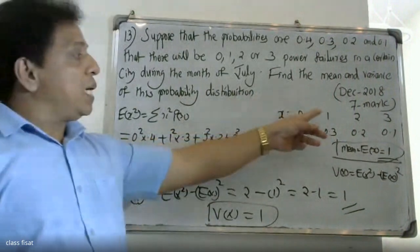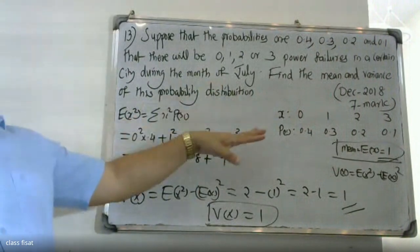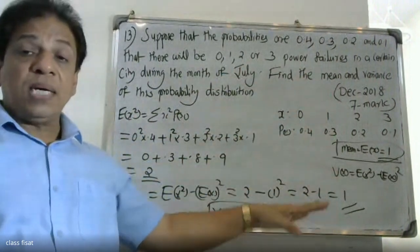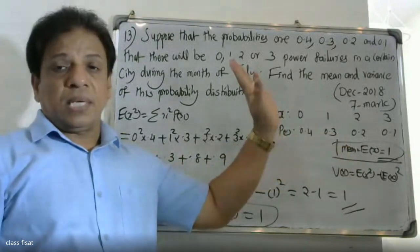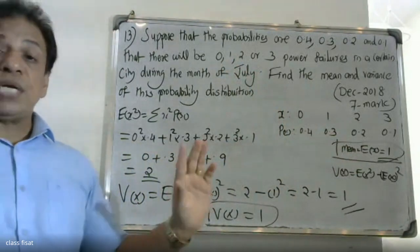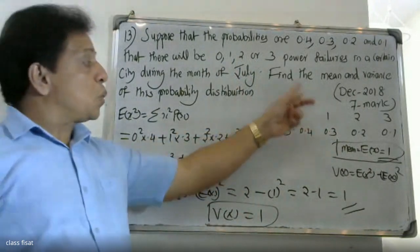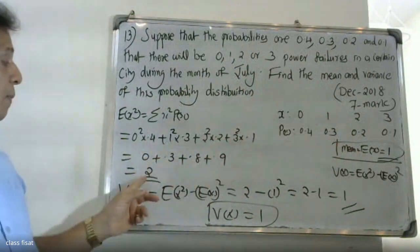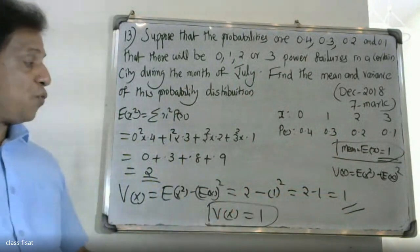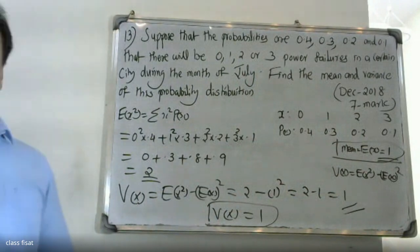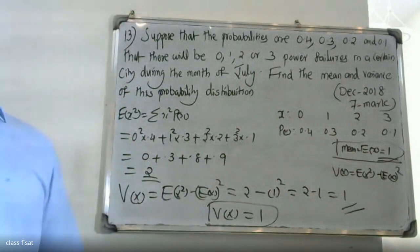This is the December 2018, 8 marks question. The variance of X is equal to 1. So we have found that the expectation of X equals 1 and the variance of X equals 1. Thank you, I will see you in December 2020, 8 marks.